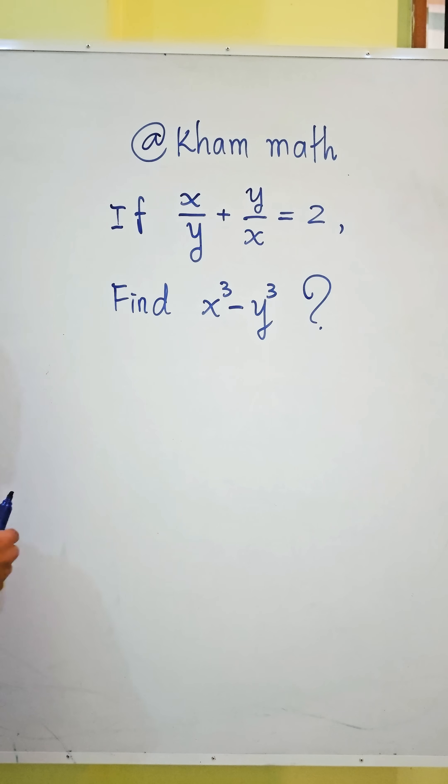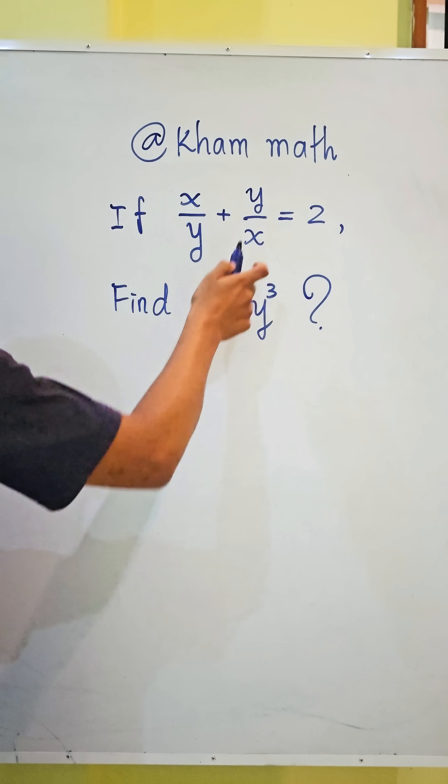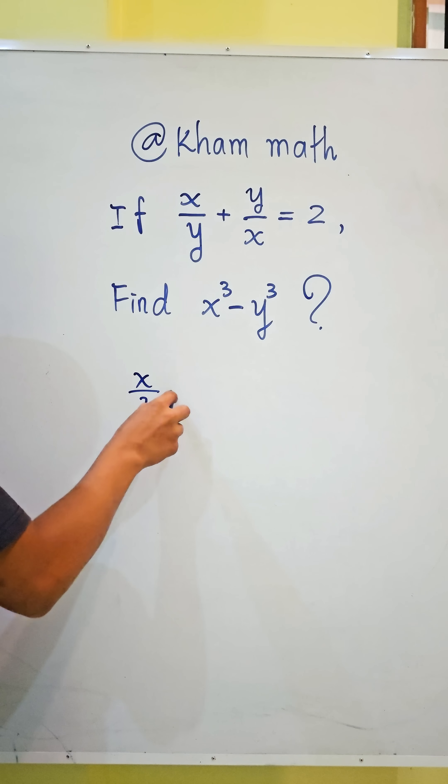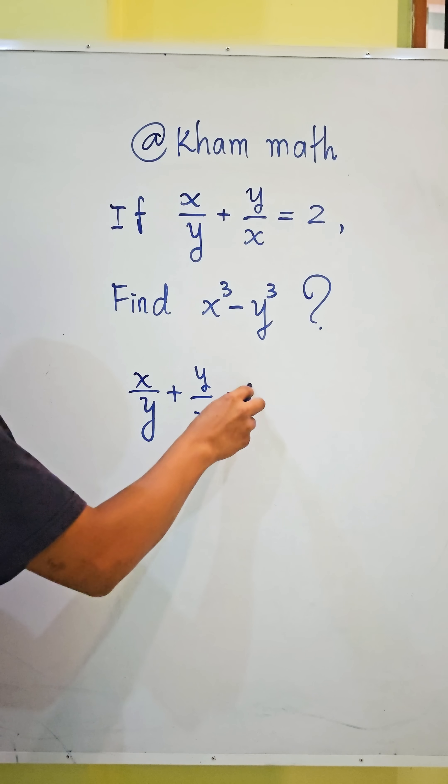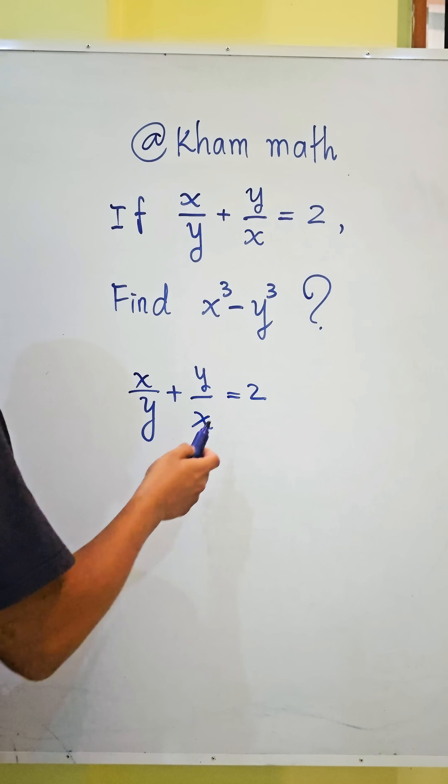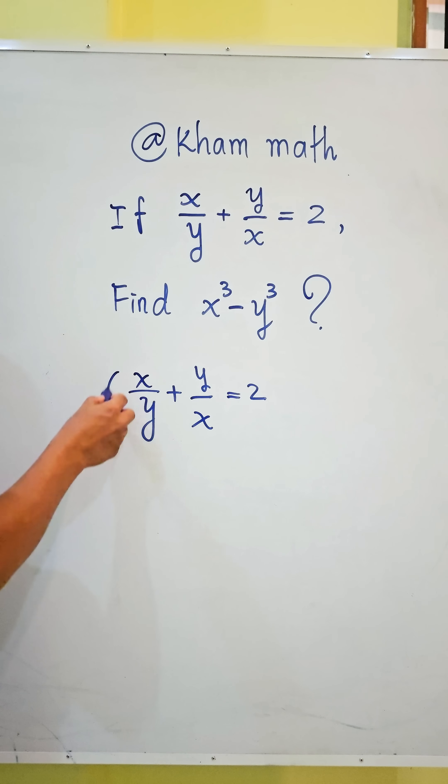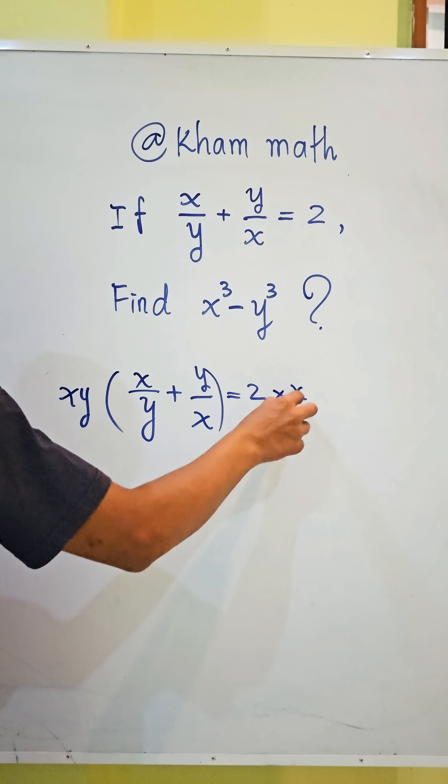First, we use the given equation x/y + y/x = 2. We multiply both sides of this equation by xy.